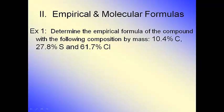Let's do some calculations. The problem says: determine the empirical formula of the compound with the following composition by mass — 10.4% carbon, 27.8% sulfur, and 61.7% chlorine. They're giving percentages because somewhere they have a container with some amount of this substance and did a chemical analysis, finding that 10.4% of it is carbon, 61.7% is chlorine, and 27.8% is sulfur, all by mass.